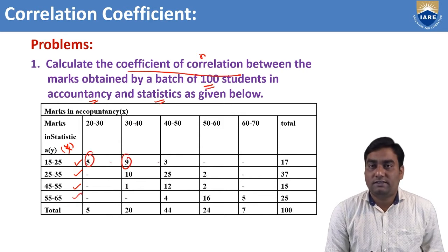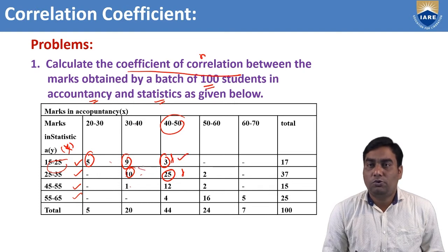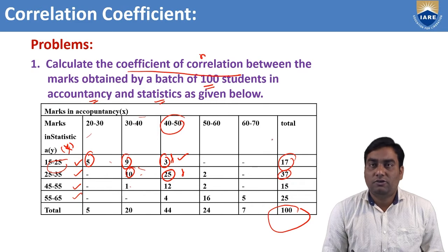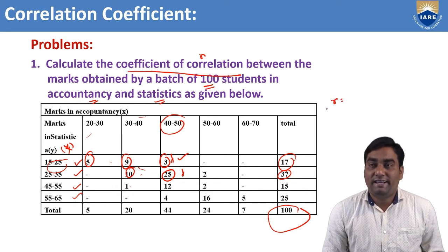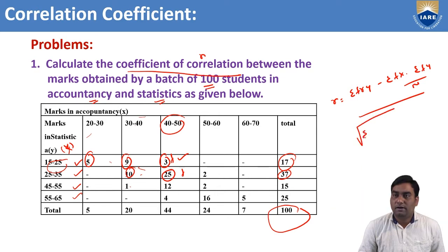These are the different frequencies — small f values. For example, students who got marks in statistics between 40–50 and accountancy between 15–25 is 3. Total number of students is 100. Observe that x values are given as intervals and y values are also given as intervals, so we find the correlation coefficient using the bivariate data formula: sigma(fXY) minus sigma(fX) times sigma(fY) divided by n, under the square root of sigma(fX²) minus [sigma(fX)]²/n times sigma(fY²) minus [sigma(fY)]²/n.